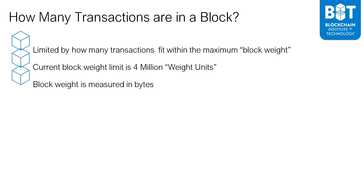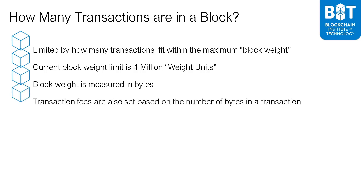The block weight is measured in bytes — this is actually the equivalent of when you have a file; a file can be 50 kilobytes, one megabyte, five gigabytes. Bytes are the units for the size of a file. Transactions have a certain number of bytes, and the block weight is measured by how many bytes in total are within that block. The transaction fees are also set based on the number of bytes in a transaction.